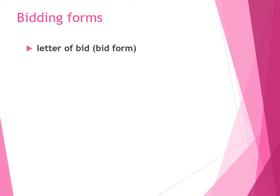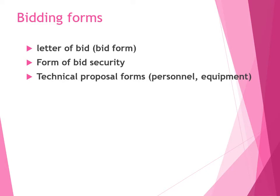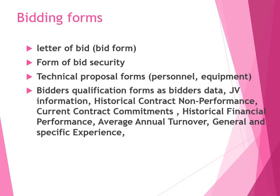Bidding forms include: letter to bid, form of bid security, technical proposal forms, personnel and equipment, bidder's qualification forms including bidder's data, JV information, historical contract reference numbers, historical financial performances, average annual turnovers, specific experiences, etc.